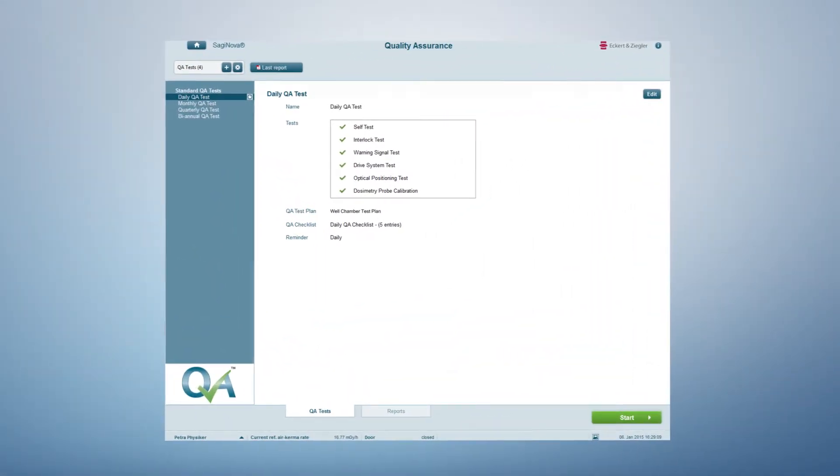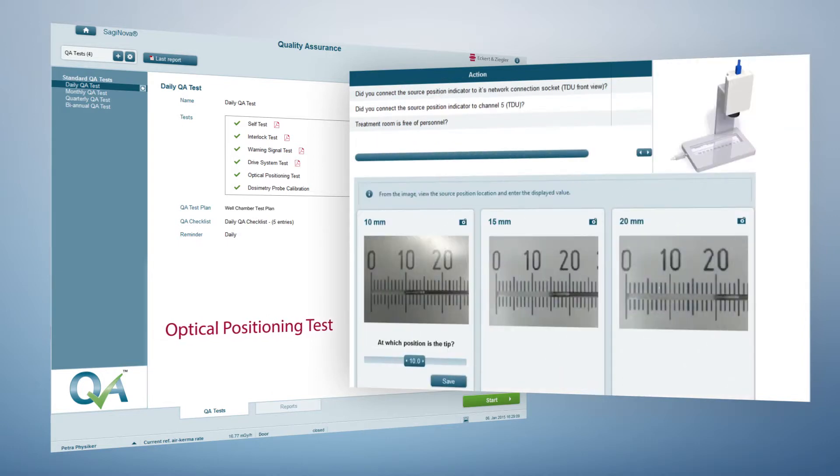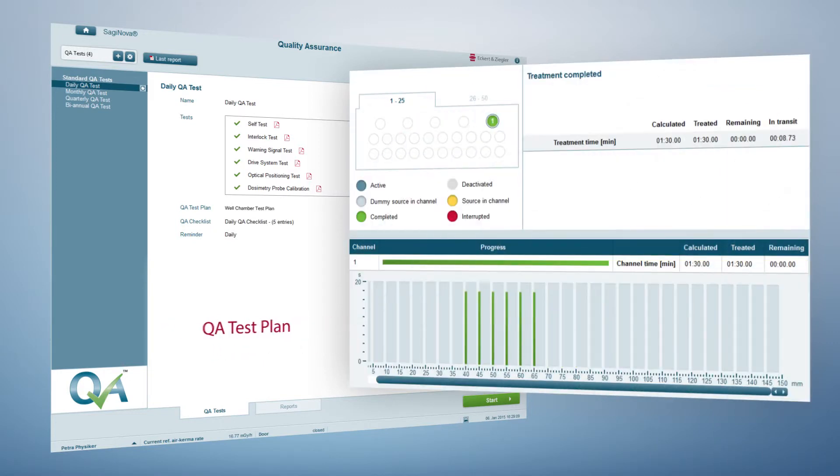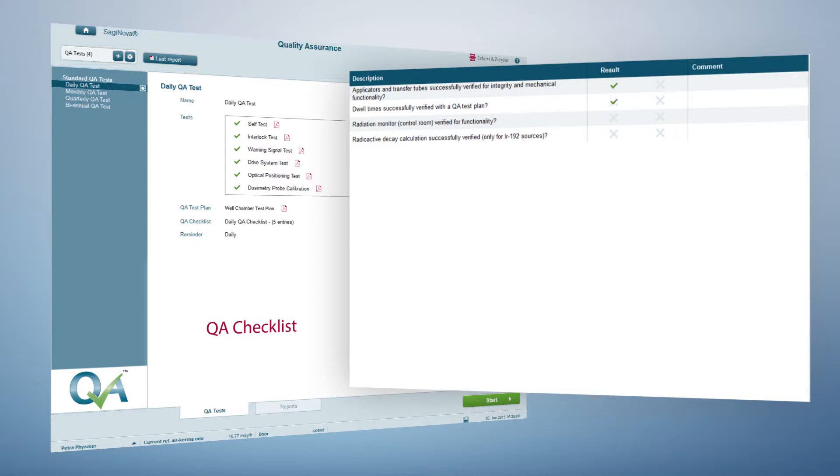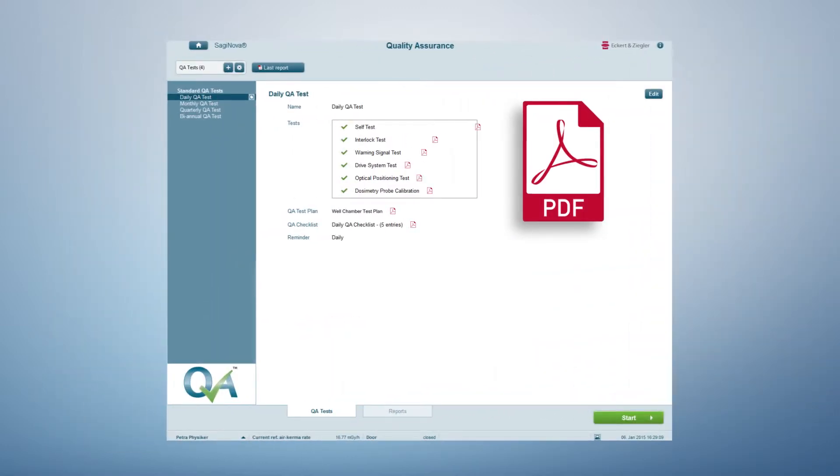Q-Assist is operated from the Saginova workstation. The highly customizable tool supports the user in adhering to the highest quality assurance standards. Q-Assist tests are performed in sequence and consist of different function tests that verify whether the system and critical components are operating correctly. Q-Assist supports full digital documentation, and the complete data is summarized in a PDF document.